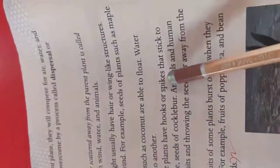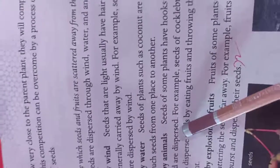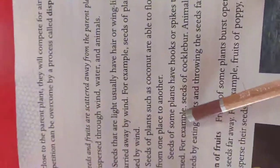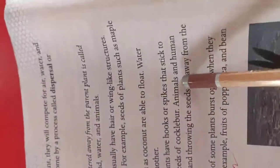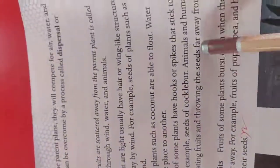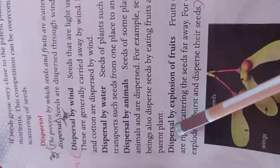Dispersed by animals. Seeds of plants have hooks or spikes that stick to animals and they are dispersed. Animals and human beings disperse the seeds by eating fruits and throwing the seeds far away from the parental plant.